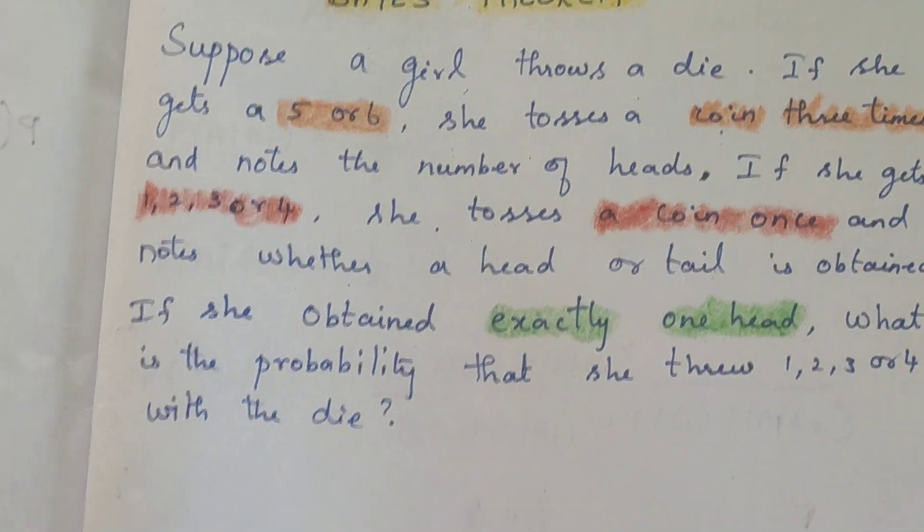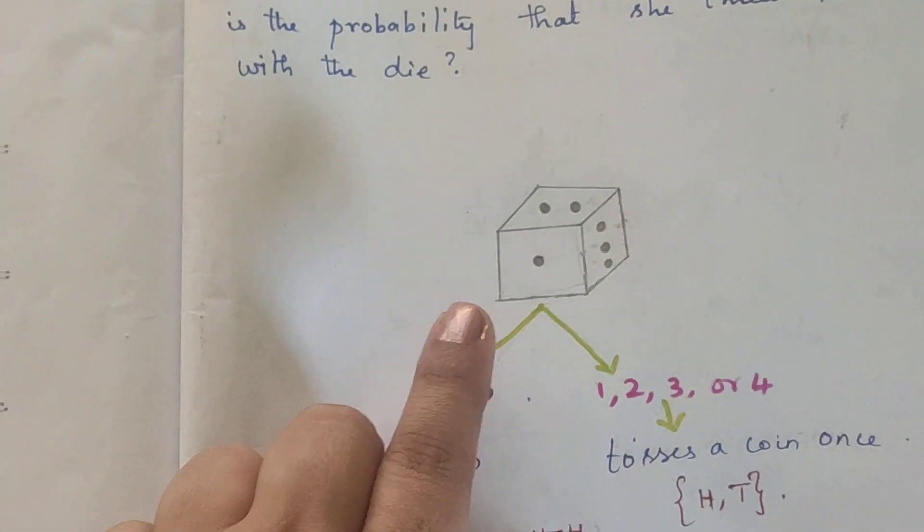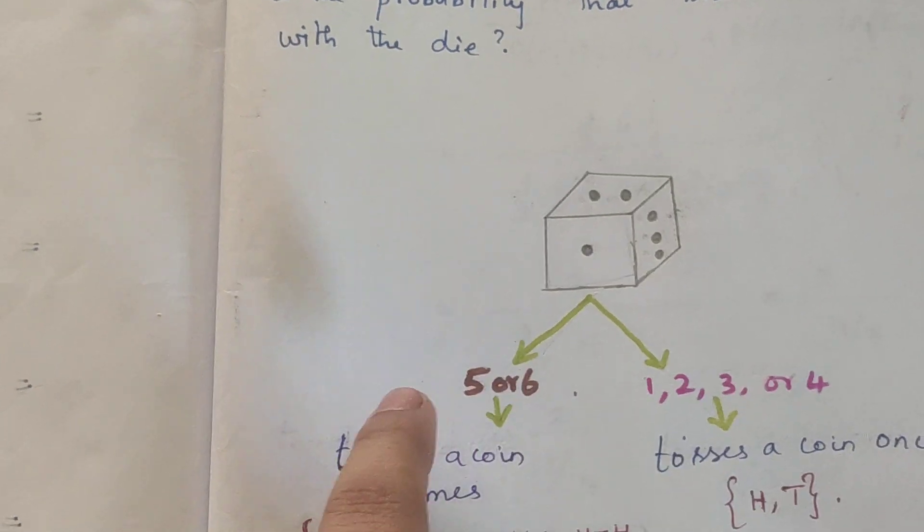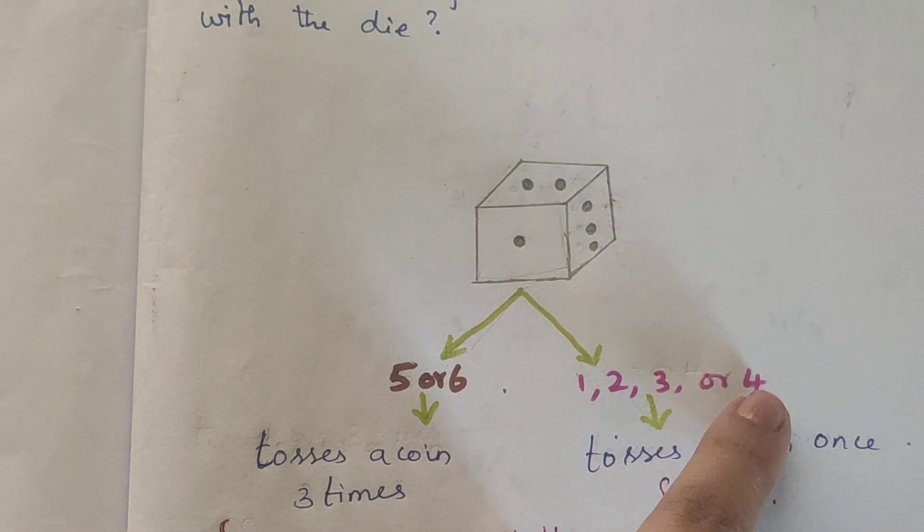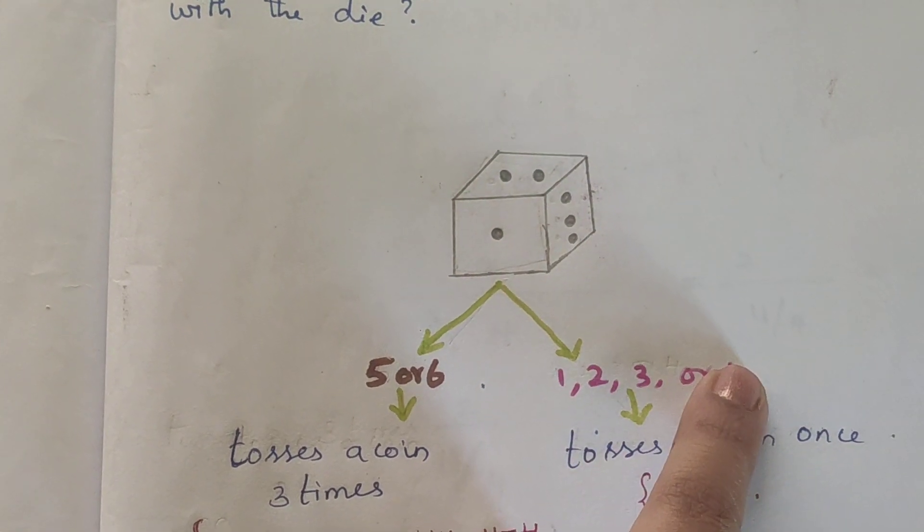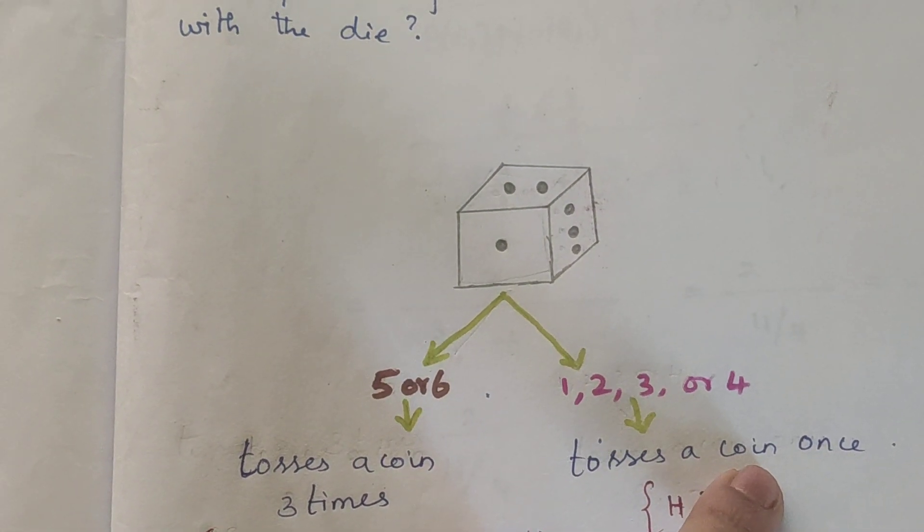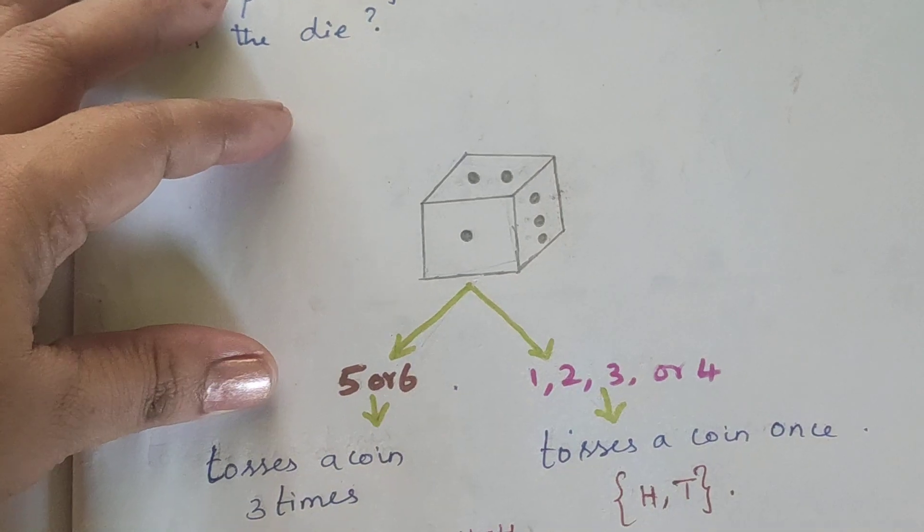This is our diagrammatic representation. Here we have a die. If it's 5 or 6, we have a coin tossed 3 times. If 1, 2, 3, or 4, we have a coin tossed 1 time. This is our situation.